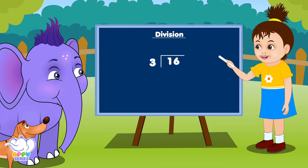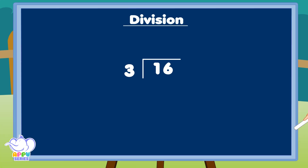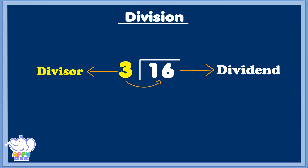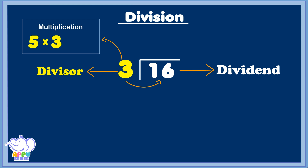Let's have a look at this — see how the DMS loop fits. Let's divide 16 by 3. 16 is the dividend, 3 is the divisor. Divide: find out how many times 3 goes in. 5 is the closest, so give it a try.